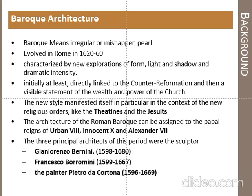Moving from early, high, and late Renaissance and coming to Baroque, again the importance and wealth to be spent was there for church buildings. This new style was particularly for churches or religious buildings made for new sects of Christianity — the Theatines and the Jesuits. The people who propagated this style were Urban VIII, Innocent VIII, and Alexander VII.